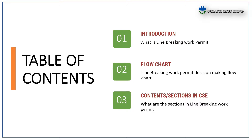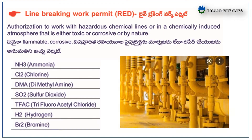What is a line breaking work permit? It is an authorization to work with hazardous chemical lines or in a chemically induced atmosphere that is either toxic or corrosive by nature. Examples include working with ammonia, chlorine, DMA, SO2, hydrogen, and bromine handling areas or equipment.